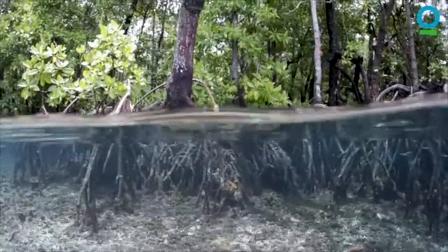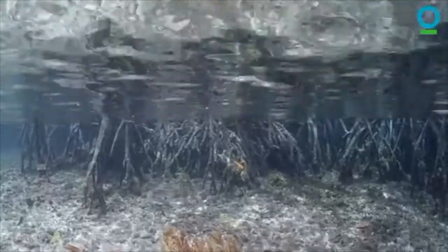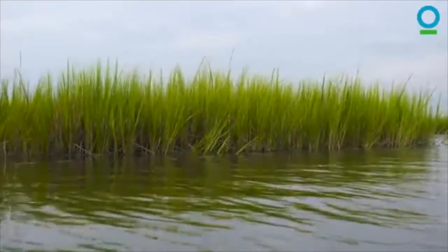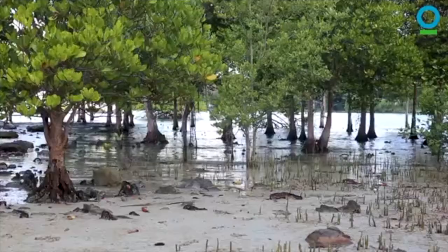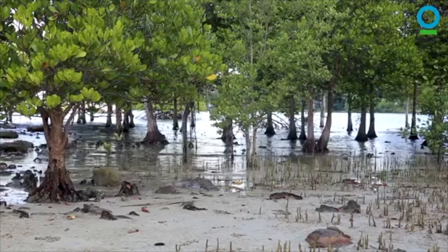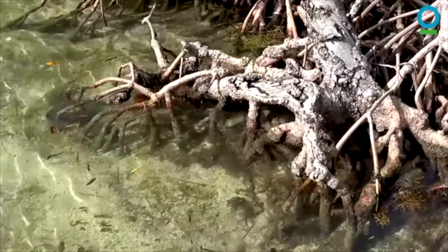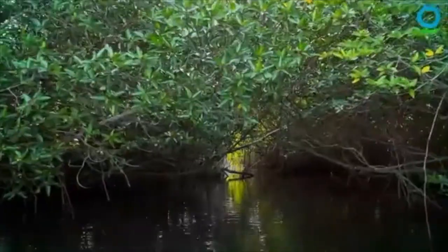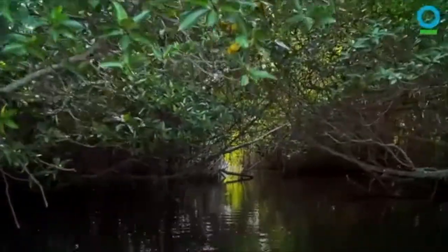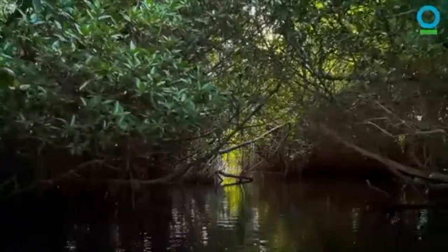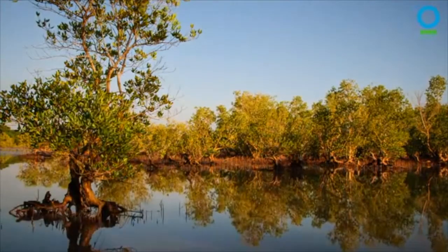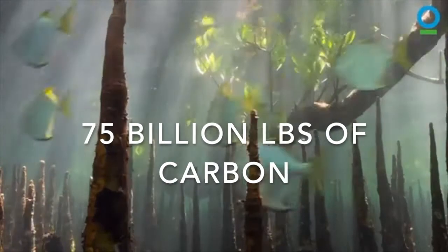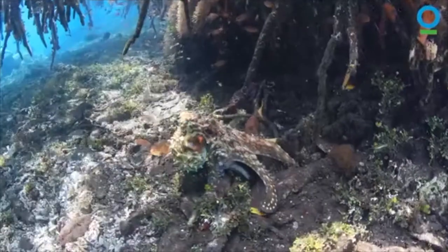Mangroves are an incredibly successful blue carbon ecosystem. Though less than 2% of all marine environments are mangroves, they store 10–15% of carbon. Just one acre of mangroves can store 1,450 pounds of carbon per year, approximately the equivalent of driving from Boston to San Francisco and back. When this rate is applied globally, 75 billion pounds of carbon storage can be attributed to mangroves.